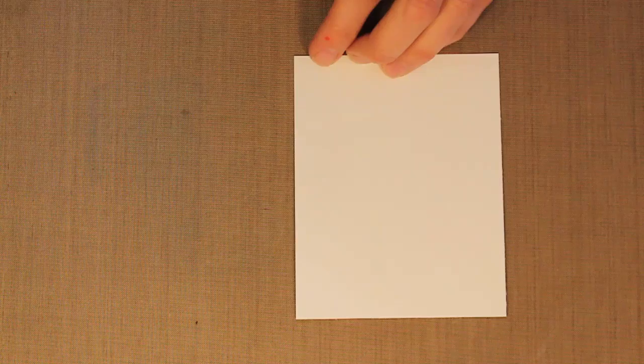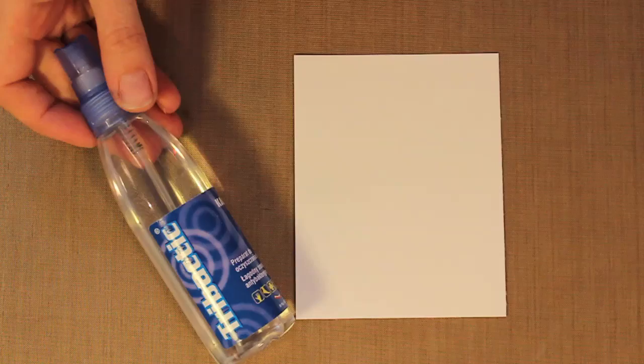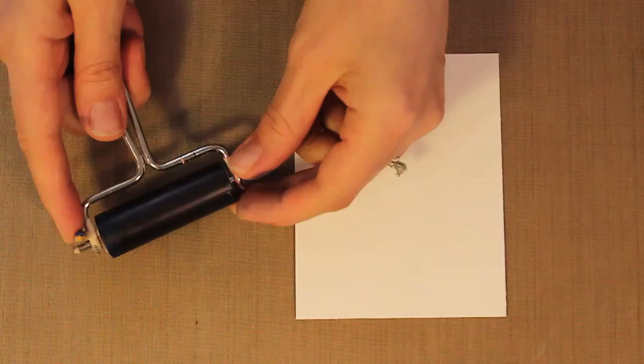So I need my alcohol ink. I also need to have some rubbing alcohol and this is in a spray bottle and you can get this at your drugstore or your local pharmacy. So I need some rubbing alcohol. And then I also need a brayer and this is just a little rubber brayer that I have, a mini brayer from Ranger.